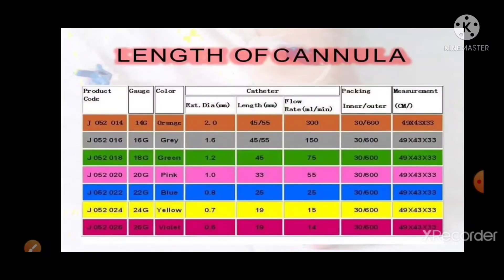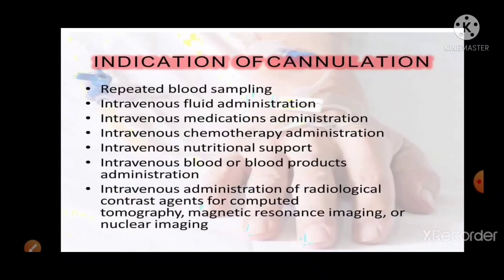There are 11 different types of cannula, and the most commonly used are the intravenous and the nasal cannula. Cannulas come in different sizes and lengths, with variations in product code, gauge, color, packaging, and measurements.